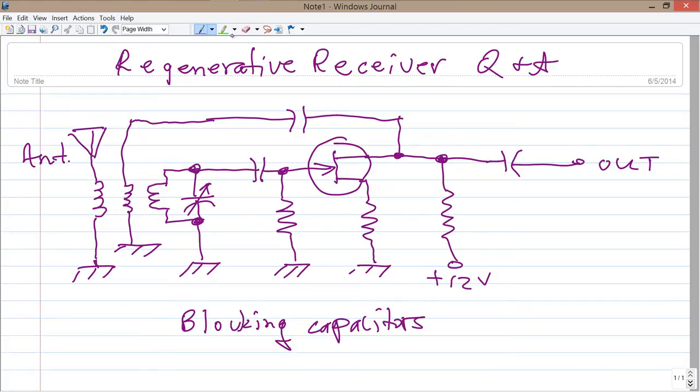That is, these two capacitors right here and right there. What that means, blocking, is that they are intended to block direct current but allow the signal alternating current to flow through. So as the radio frequency signal comes in here, it can pass through that capacitor easily to get onto the gate of this field effect transistor.